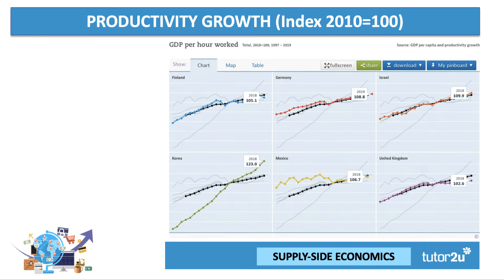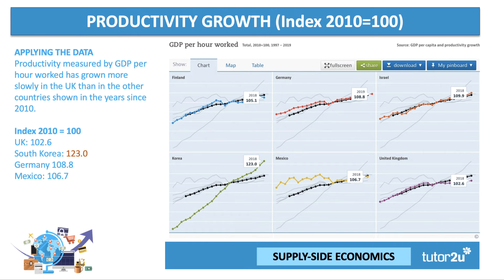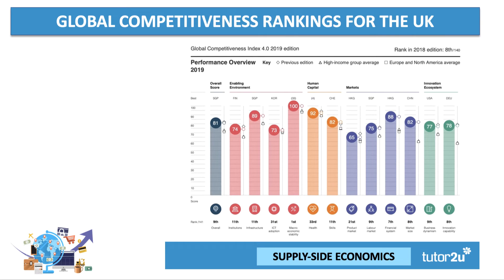Another supply-side indicator is productivity. This chart shows an index of GDP per hour worked since the early 1990s, with the index based to the year 2010, which tells us what's happened to productivity in those countries since the turn of the decade. South Korea has achieved a 23% rise in GDP per hour worked; Germany is closing on 9%; Mexico a shade under 7%. But the UK's productivity growth has been fairly flat — it's only risen by about 3% since 2010. Low productivity growth is a key supply-side weakness.